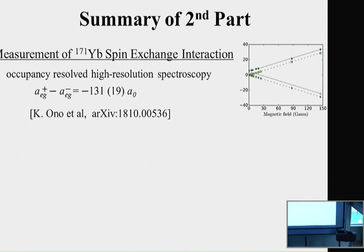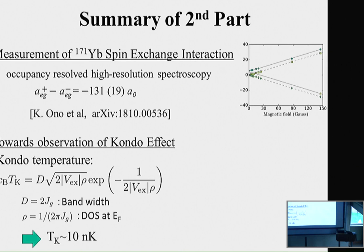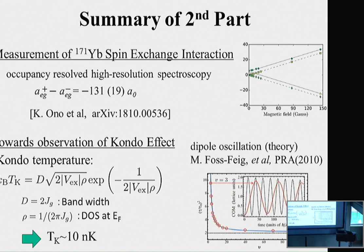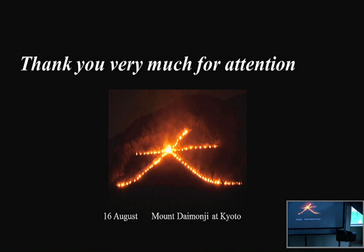This is the summary of the second part of my talk. Towards the observation of the Kondo effect, knowing the Kondo temperature is very important. Using the expression for the weak coupling regime, we evaluate the Kondo temperature at approximately 10 nanokelvin, which is not too low, so we think it can be achieved in our experiment. For probing the Kondo effect, we plan to study the behavior of dipole oscillation, as discussed previously by the Rey group. Thank you very much for your attention.